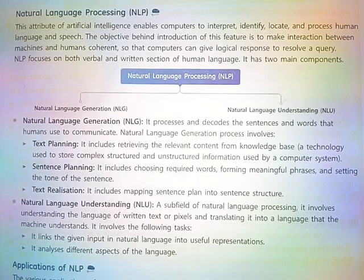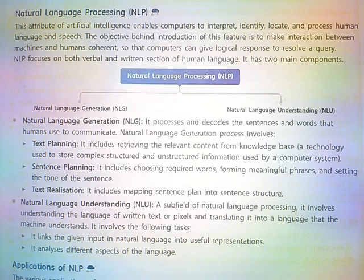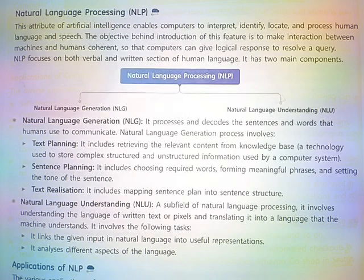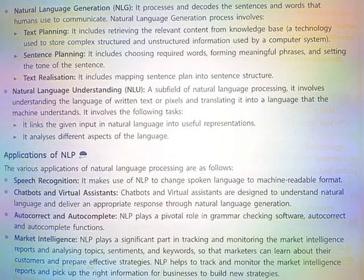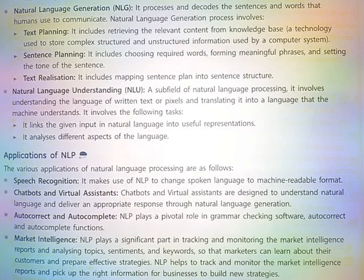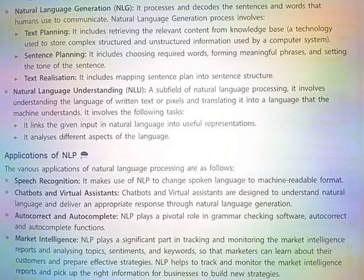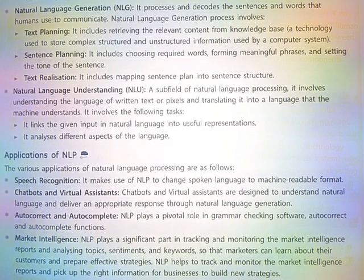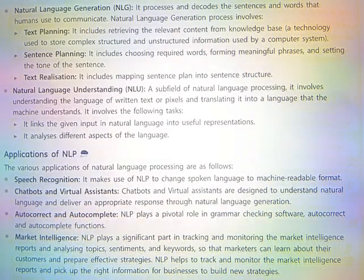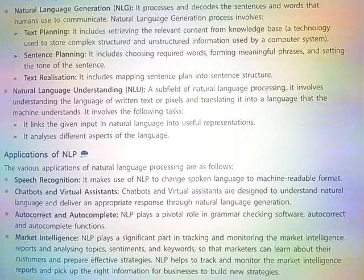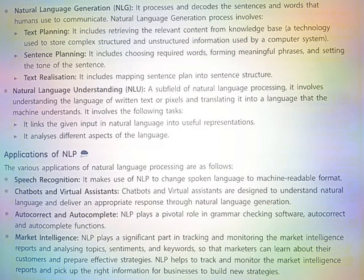The two main components are Natural Language Generation (NLG) and Natural Language Understanding (NLU). Natural Language Generation processes and decodes the sentences and words that humans use to communicate. The NLG process involves Text Planning, which includes retrieving relevant content from a knowledge base — a technology used to store complex, structured, and unstructured information used by a computer system.